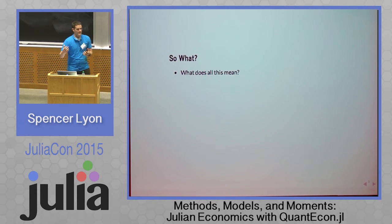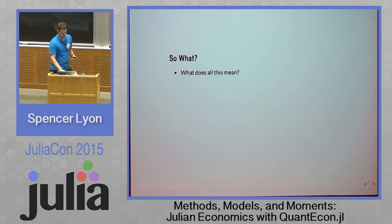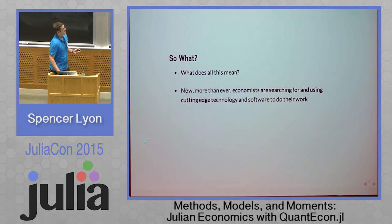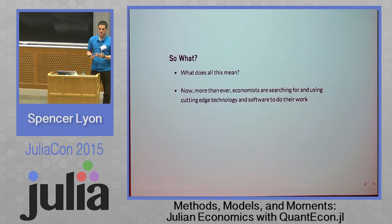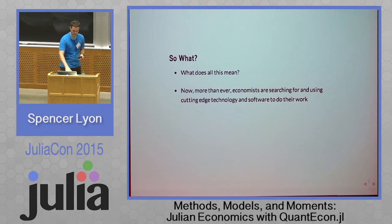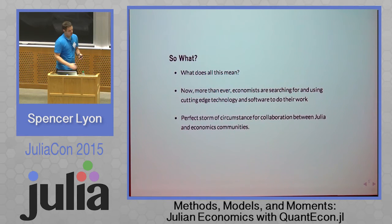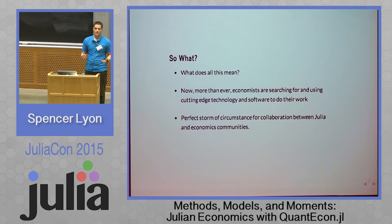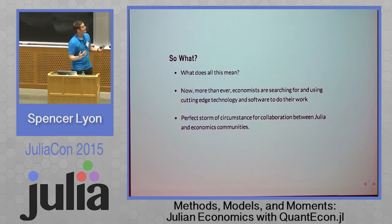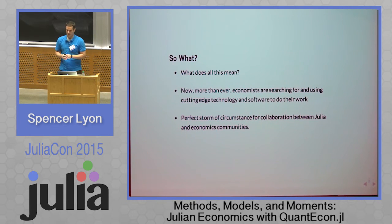No models today are like the simple McCall example. What I'm saying is that now more than ever, economists are searching for and using cutting-edge technology and software to do their work. They rely on good tools in order to solve the models they write. This is a perfect storm of circumstance for communities like Julia or SciPy and academic economists to start collaborating and working together.